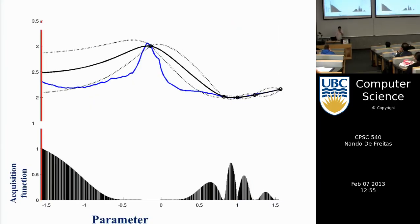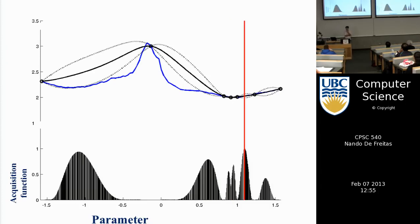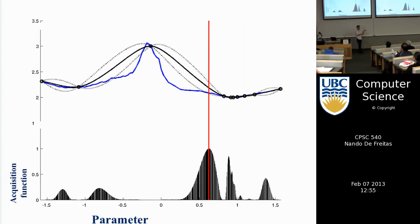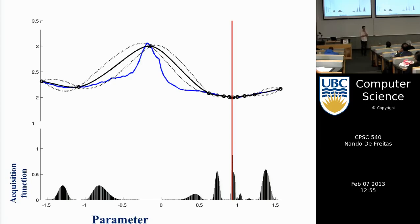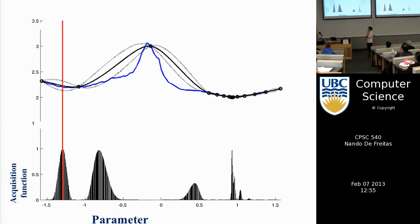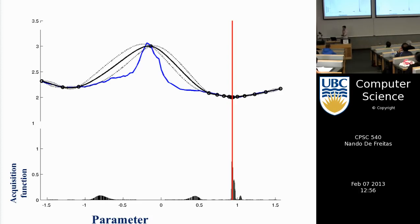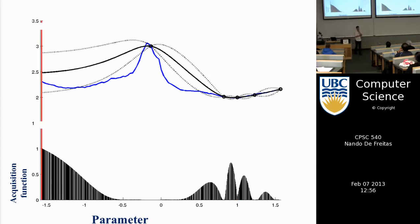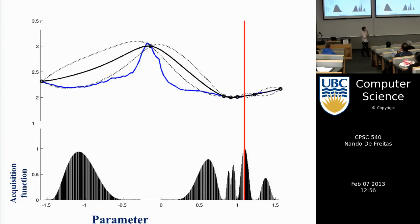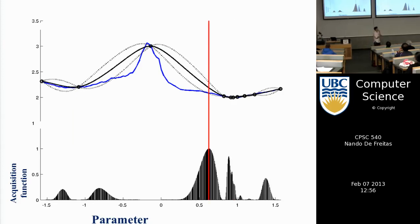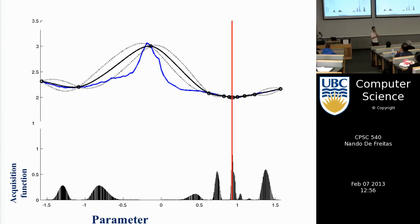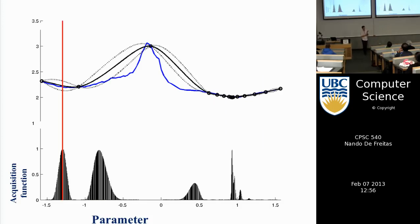Just as you can look for the maximum, you can also look for the minimum — it's the same problem. As this animation shows, we're trading off exploration and exploitation and eventually locate the optimal. One thing illustrated here is that to find the minimum you don't need to know the whole function — you don't need to visit the entire function to find the minimum.